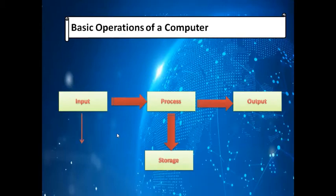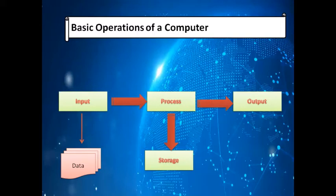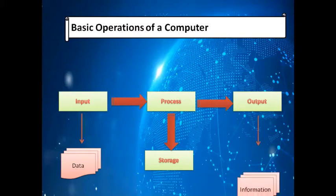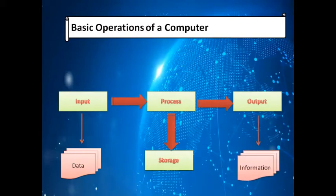What is data? Raw facts and figures are called data. Data is basically meaningless raw facts and figures. With the help of input devices we enter this raw data into the computer. After processing, the CPU converts it into meaningful information. So data is raw facts and figures, and information is the processed form of data which is meaningful and easily understood.